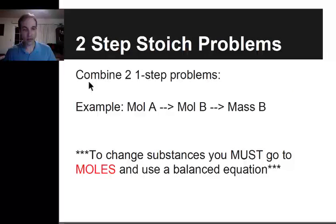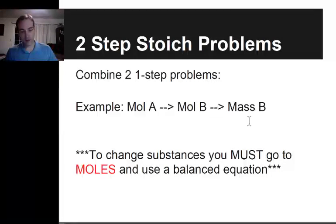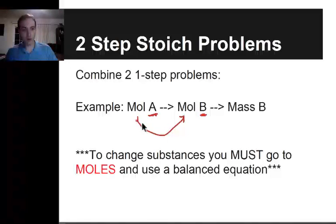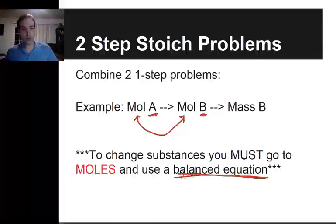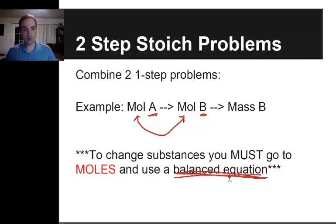Two-step stoichiometry problems. Here's an example of a path: if I have moles of A, I go to moles of B, then convert moles of B to mass of B. The biggest thing is to change substances — to get from substance A to substance B. To get from moles of one type of substance to moles of another, you must have a balanced equation. This is why we spent so much time last unit practicing balancing equations.